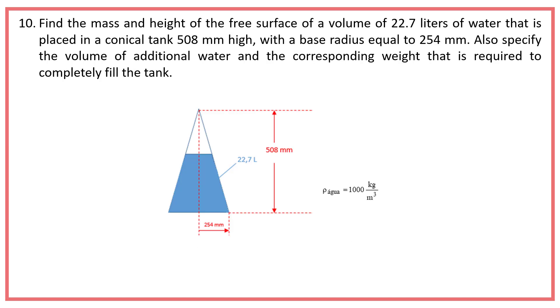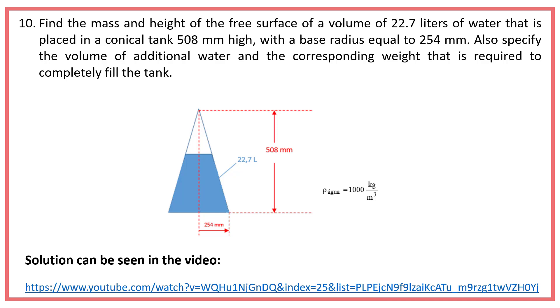Last: Find the mass and height of the free surface of a volume of 22.7 liters of water that is placed in a conical tank 508 millimeters high, with a base radius equal to 254 millimeters. Also specify the volume of additional water and the corresponding weight required to completely fill the tank. Solution can be seen in the video.